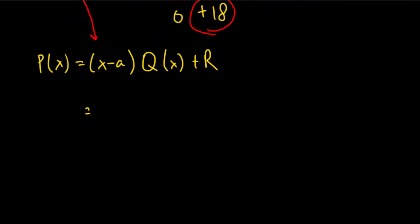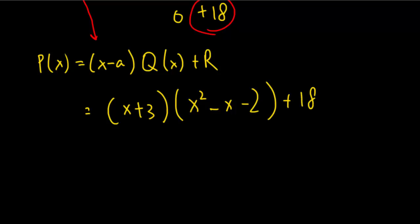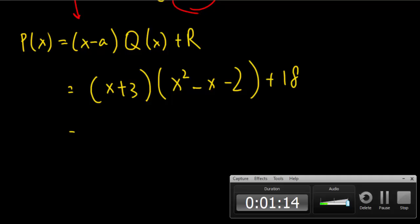And this is my remainder. So I can put this back together. That will just be x plus 3. What's my quotient? x squared minus x minus 2 plus remainder 18. So if I evaluate this, I'll get back exactly what I just started with, which is x cubed plus 2x squared minus 5x plus 12.